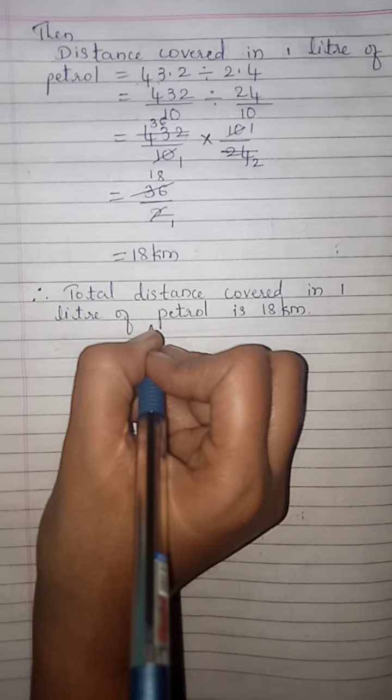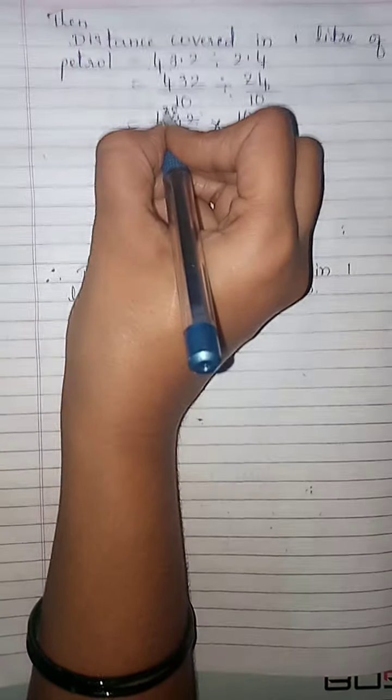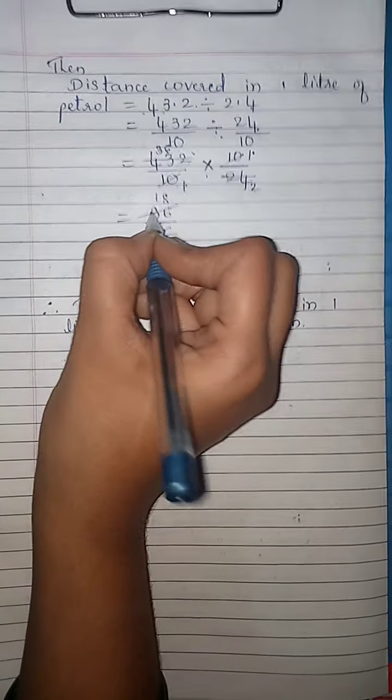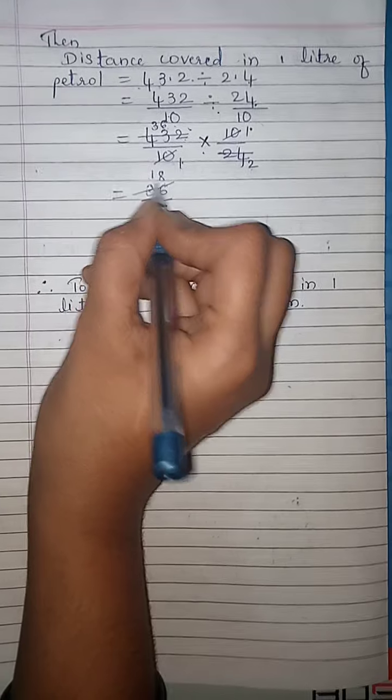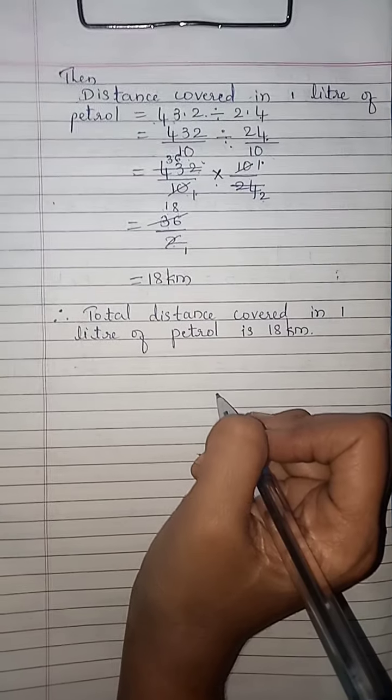In summary: the total distance covered by the vehicle in 2.4 litres of petrol is 43.2 kilometres, and we need to find the distance covered in 1 litre of petrol, which is 43.2 divided by 2.4. Converting: 432 by 10 divided by 24 by 10, multiplied by the reciprocal 10 by 24. The 10s cancel, and dividing 432 by 24 gives 18. Therefore, the total distance covered in 1 litre of petrol is 18 kilometres.